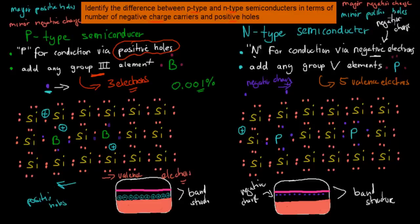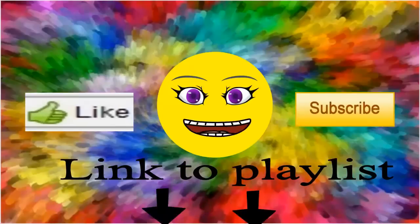And that's what you should know for the stop point — you should know how they carry the current, and also know that both the P-type and the N-type semiconductors are better conductors than your normal pure silicon or pure germanium semiconductor. So when we add either a group 3 or a group 5 element, we make it a better semiconductor. I hope that was useful. Thank you for watching.